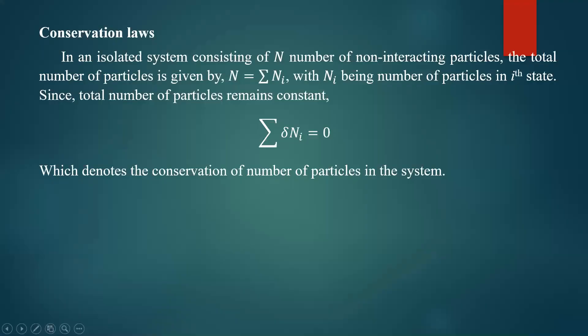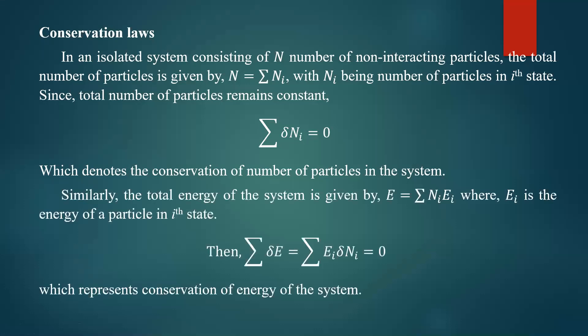Now consider the conservation of energy. Similarly, the total energy of the system is also constant, which is given by E equals summation of ni times ei, where ni represents the number of particles in the ith state and ei is the energy of the ith state. Each particle in the ith state will have the energy ei.